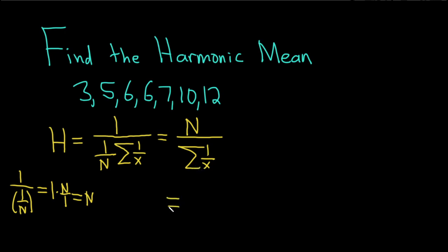Okay, let's use it. This is equal to... So let's figure out what n is. We have 1, 2, 3, 4, 5, 6, 7 numbers. So n is 7. So that goes up top.